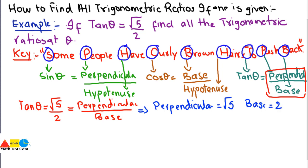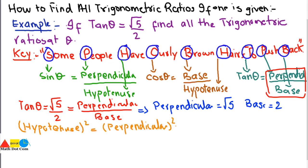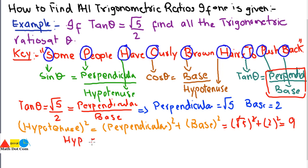Only one side is left — the hypotenuse. To find it, we use the Pythagorean theorem: hypotenuse squared equals perpendicular squared plus base squared. Putting in the values: (root 5) squared plus 2 squared gives us 5 plus 4, which equals 9. Taking the square root of both sides, the hypotenuse equals 3.